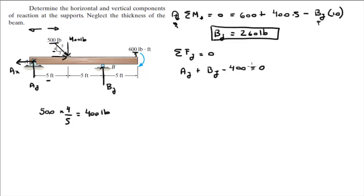And all of that is equal to 0. So we already have By. We found it on the previous step. So you plug it in and you solve for Ay. And you get that Ay is equal to 140 pounds.